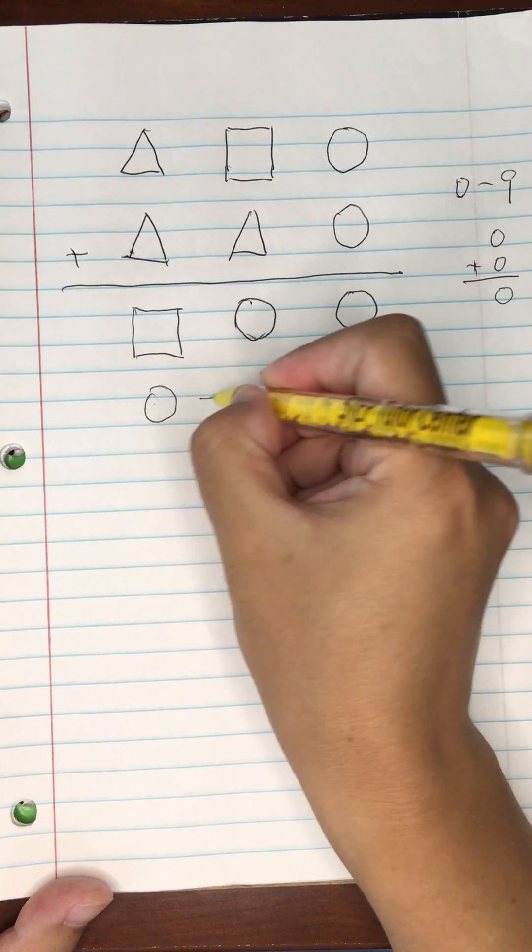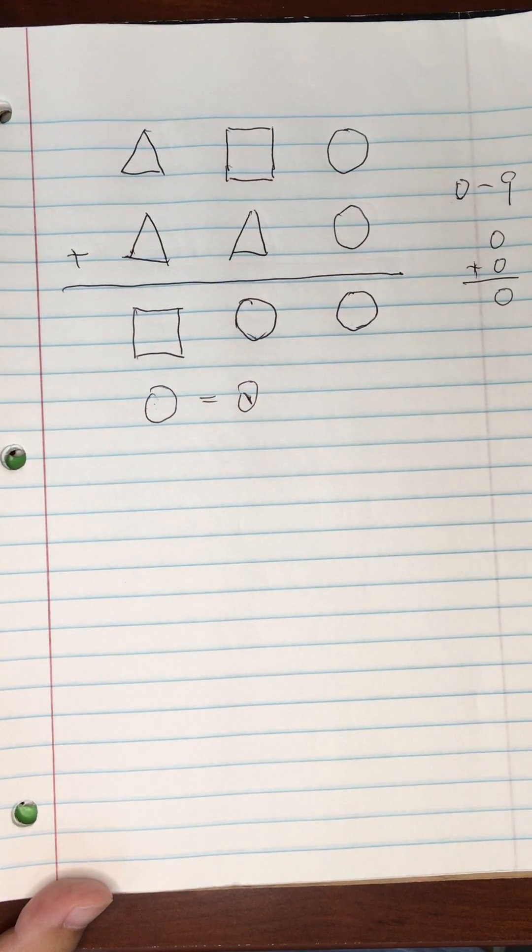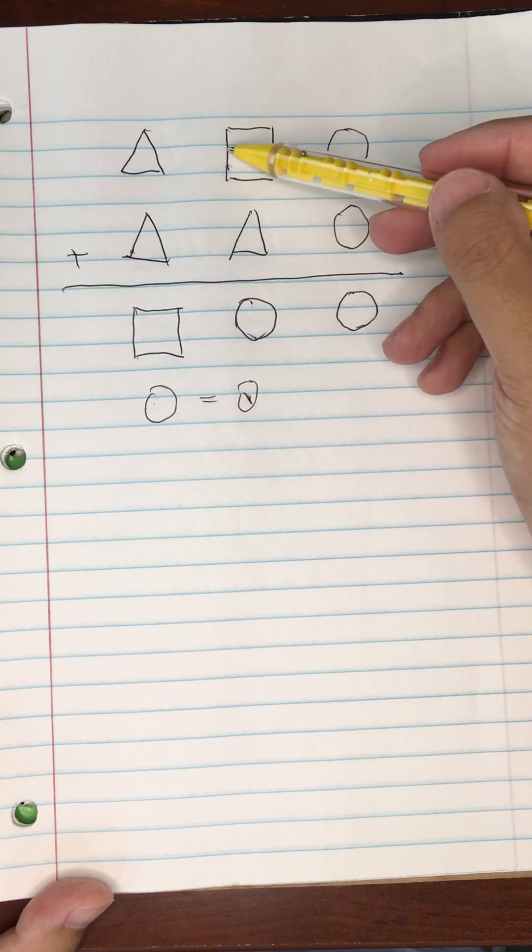So if we add two zeros together, we end up with another zero. We know that circle is actually zero.